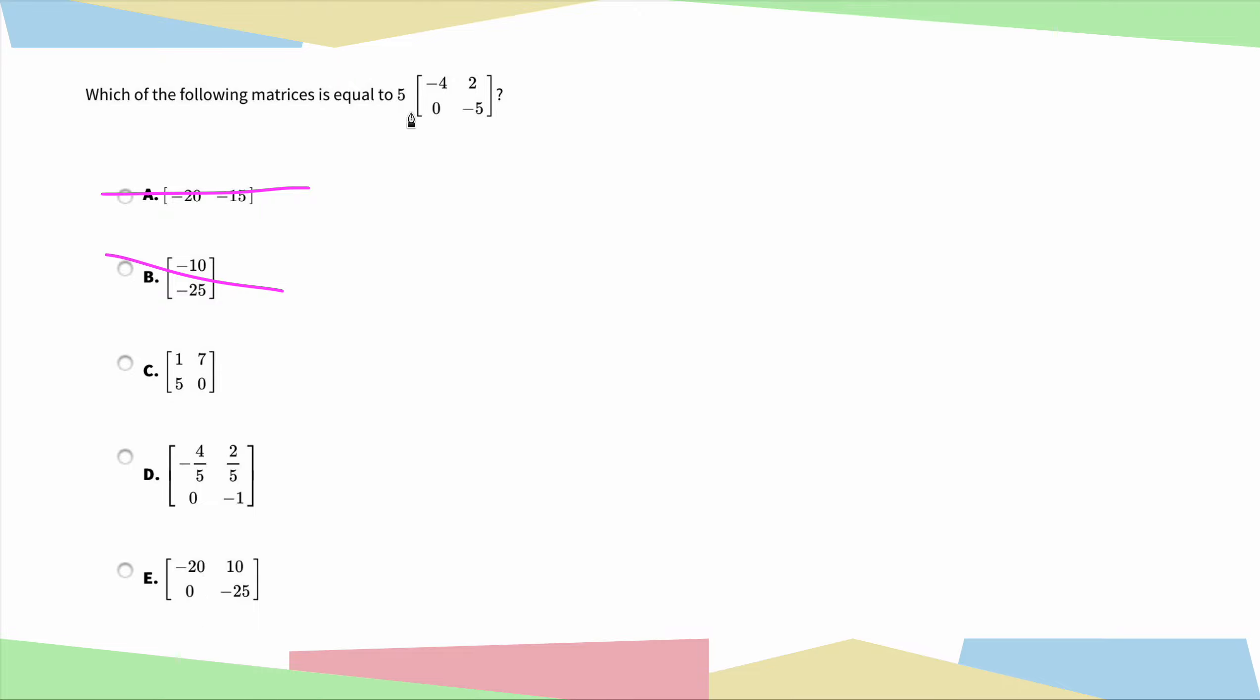So now I can go ahead and just start multiplying this in. So 5 times negative 4 would give me negative 20, and I immediately know my answer choice is E. Just for the sake of this video, I'll go ahead and go through the rest, but really I'm done. You can see how quick these questions can be if you know how to do these operations on matrices.